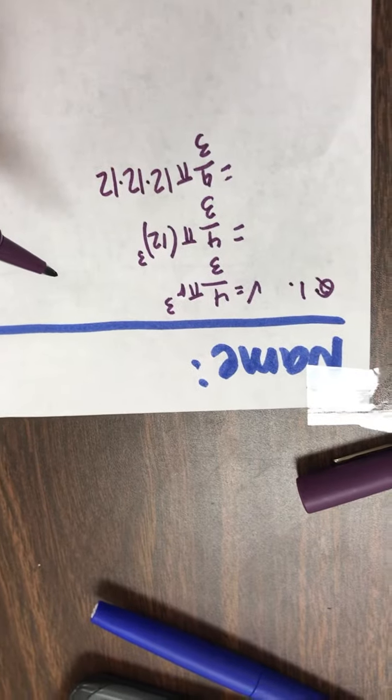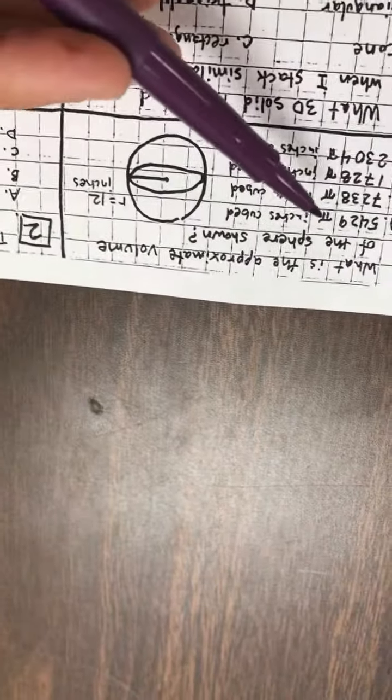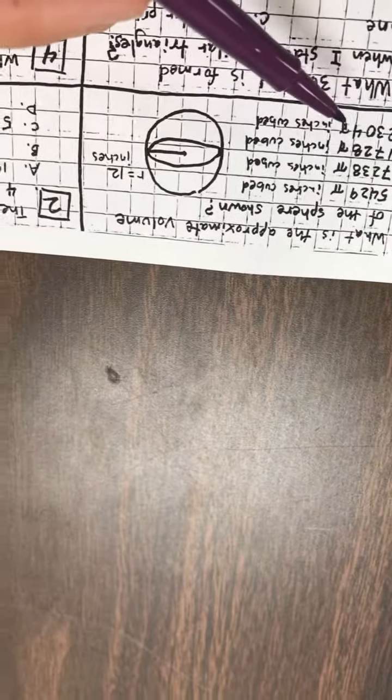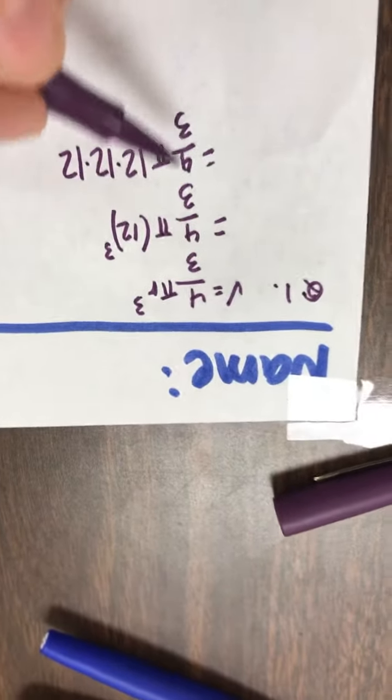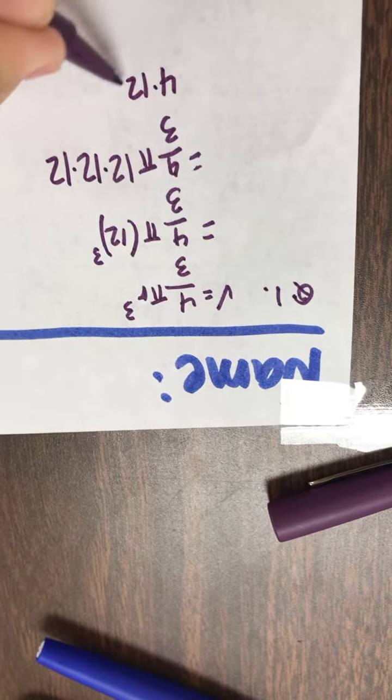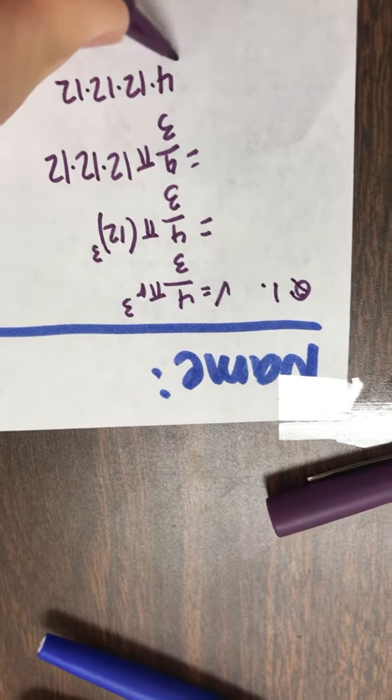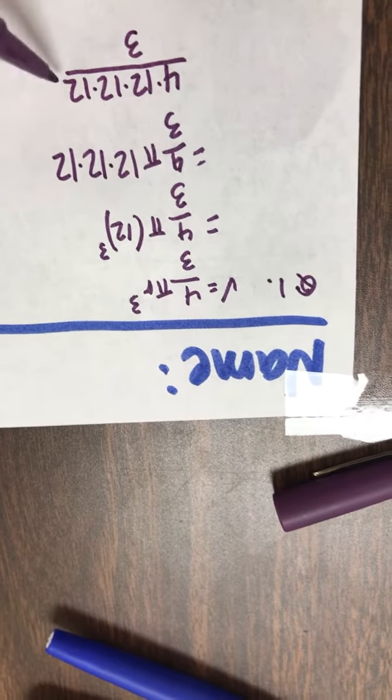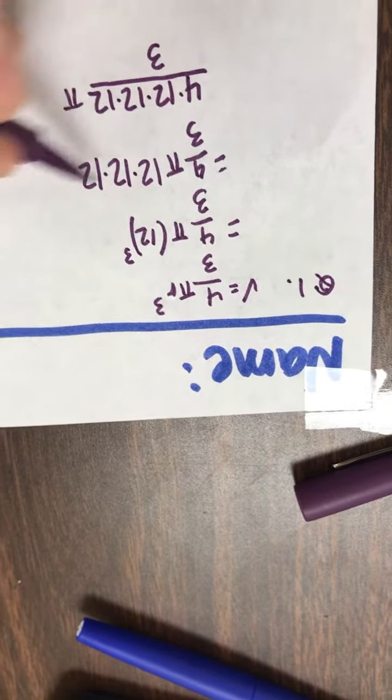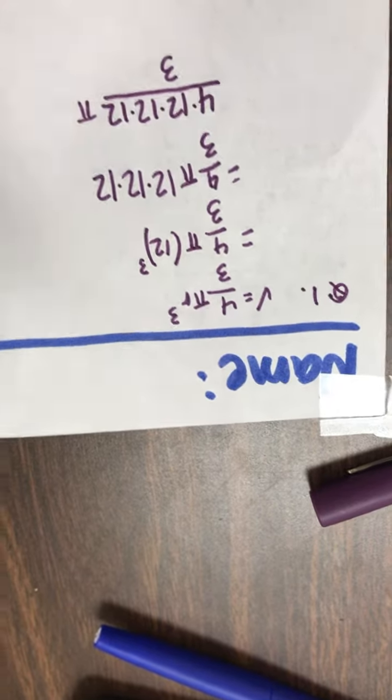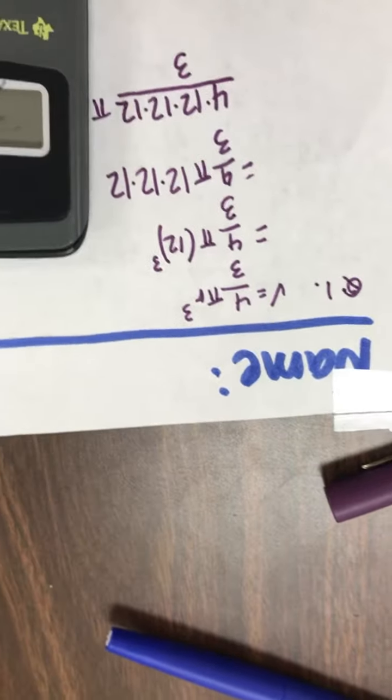And the answer choices we have are in terms of pi. So we want to hold off on multiplying by that π. So we're really just concerned with multiplying the 4 times the 12 times the 12 times the 12. And then whatever we get, we can divide by 3. And then the π we will just leave out there on the side. So we can change the order of the multiplication.